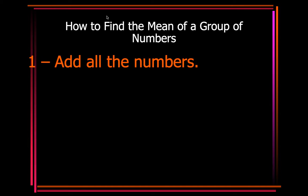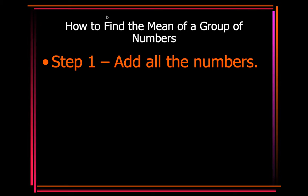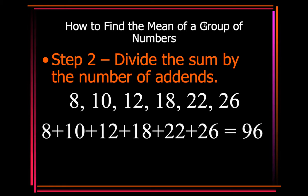How to find the mean of a group of numbers. Step one, you need to add all the numbers that are in your data set. So you notice how they're in order from least to greatest right here. You need to make sure that you do that first and then add your numbers together, which gives you 96.